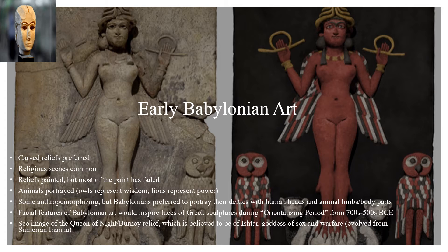Let's look more closely at this image here. It's of the Queen of Night, also known as the Burney Relief. It's believed to be of Ishtar, the Babylonian goddess of sex and warfare, who evolved from the Sumerian deity Inanna that we discussed previously. As you can see, there's a bit of a likeness between the face of the Queen of Night — presumably Ishtar — and the goddess Inanna, whose mask we viewed in a previous lecture.